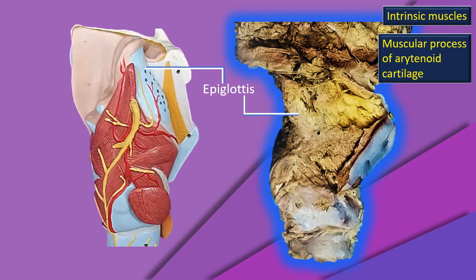Now the difficult part — it was easy to see on a model because everything is well contrasted and clearly defined, but identifying muscle fibers on a specimen needs a little training. Now, correspondingly, I will show you the same labels on both the model and the dissected specimen. The flashing star is again the muscular process of the arytenoid cartilage — keep that in mind.